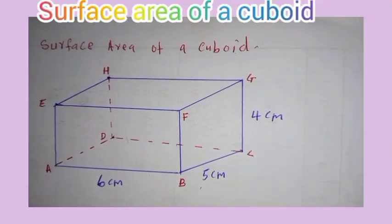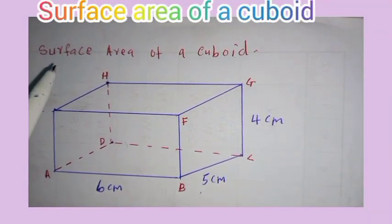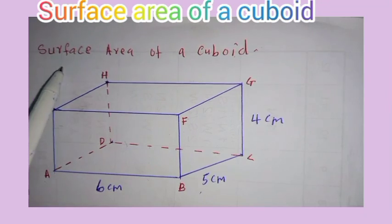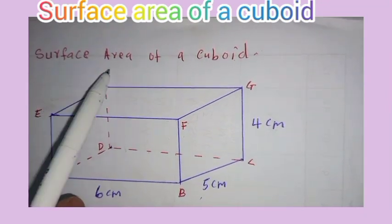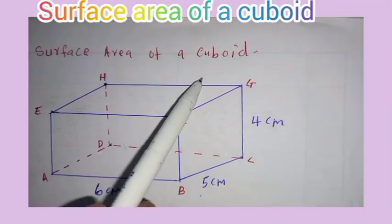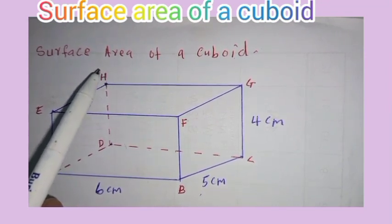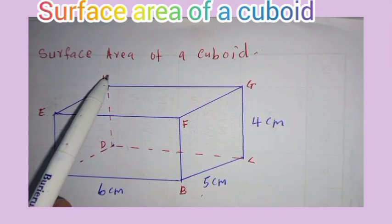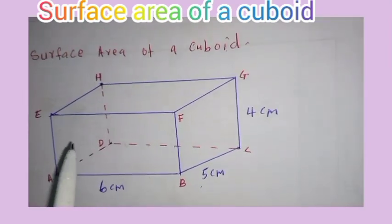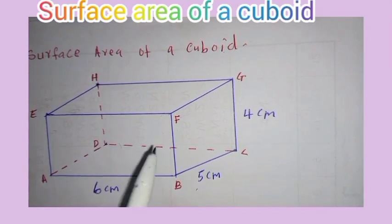Hello, my fellow mathematician. Welcome to the study of mathematics. In this video, we are going to discuss the surface area of a cuboid. And generally, area is defined as the extent of the surface of an object. A cuboid has six faces.